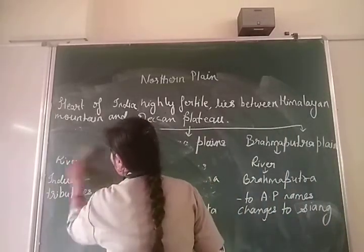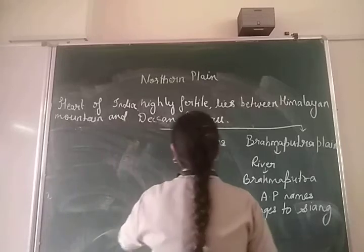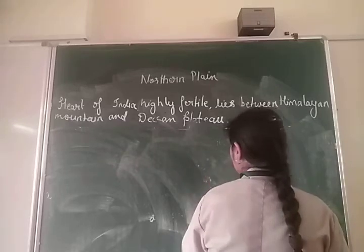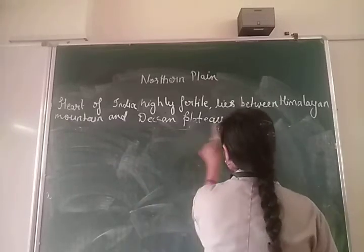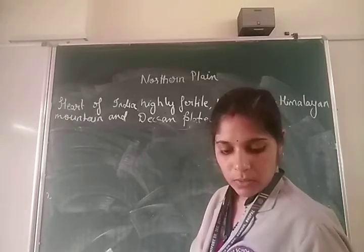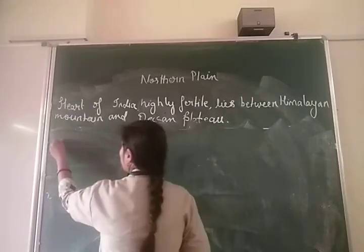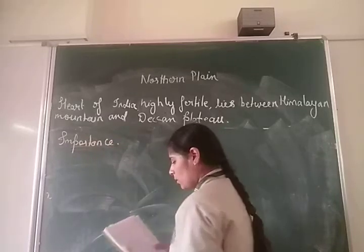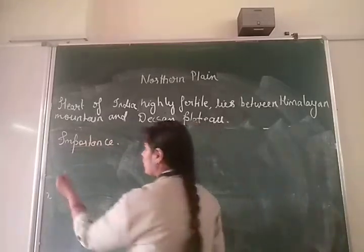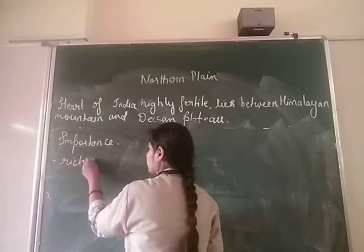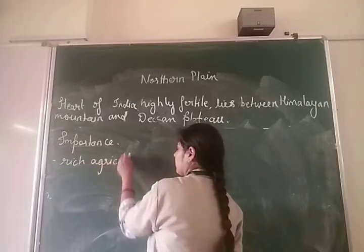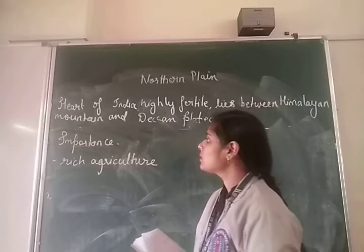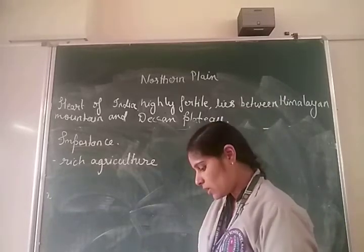So now we have discussed the three plains — the Punjab Plain, the Ganga Plain, and the Brahmaputra Plain — and studied the main rivers that flow in each. Now we are going to discuss the importance of this plain. As the soil is fertile, this plain is rich in agriculture, which means it is good for growing crops.